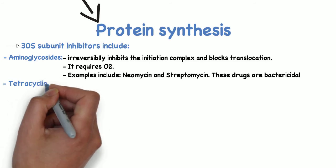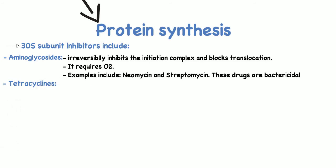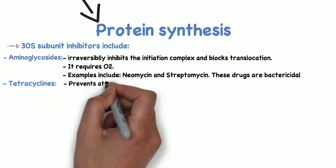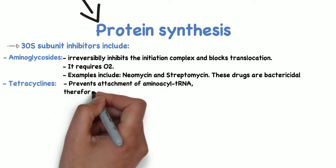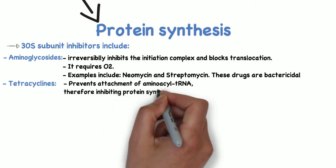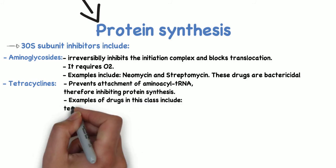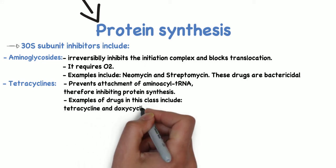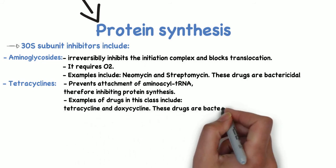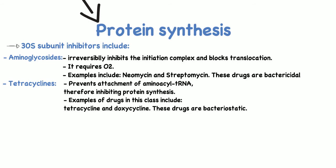Another example of 30S subunit inhibitors are tetracyclines, which work by binding to the 30S subunit and preventing attachment of aminoacyl tRNA. Therefore, it inhibits protein synthesis. Some examples of drugs in this class include tetracycline and doxycycline. These are bacteriostatic.